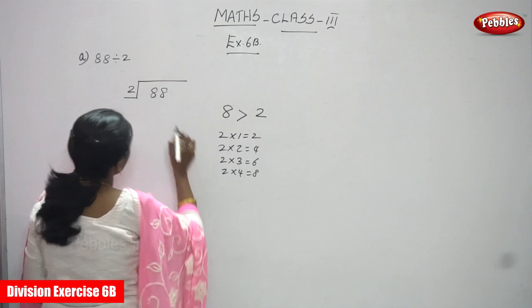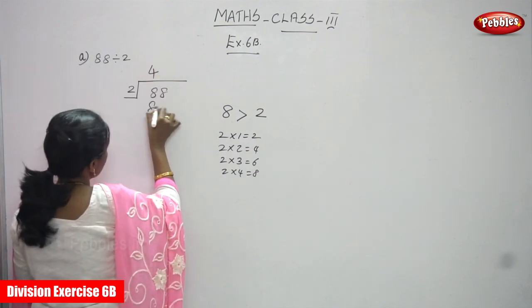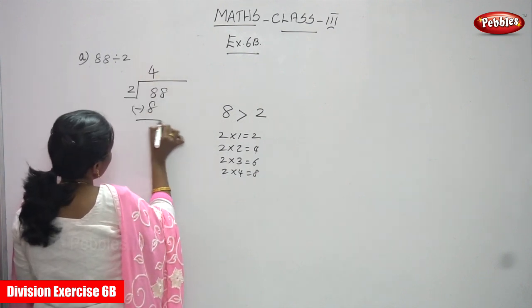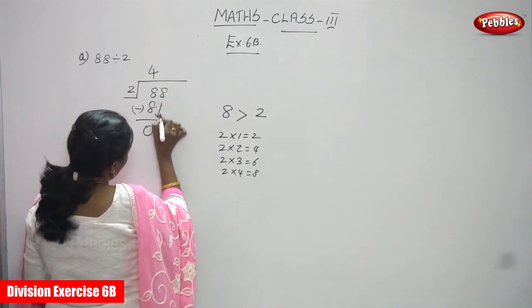Now eight minus eight is equal to zero. You must bring down the eight here.